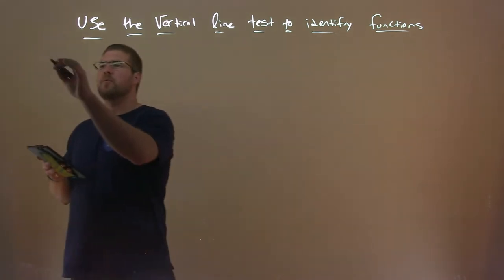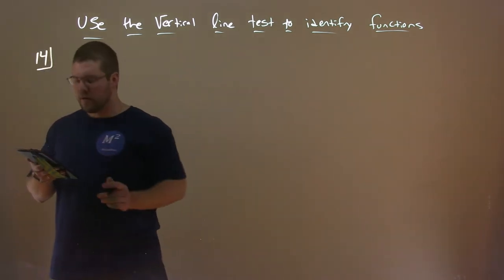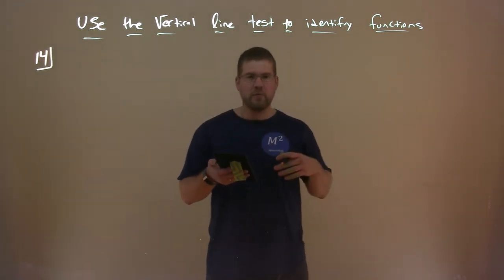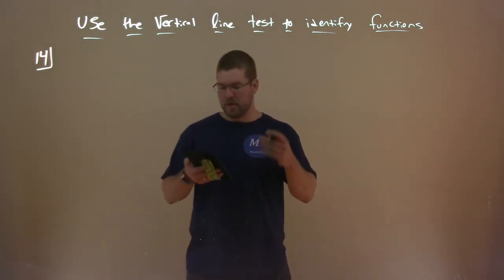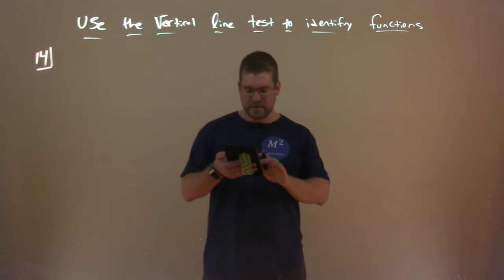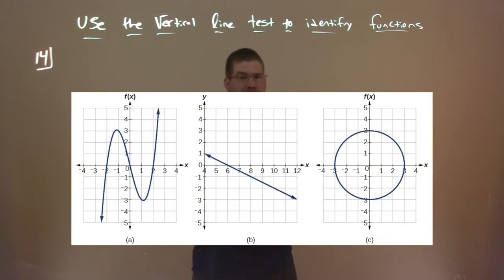So right here, for example 14, we have three graphs: graphs A, B, and C. Well, how can we apply the vertical line test here to see if this is a function? Which graphs here represent a function y equals f of x?